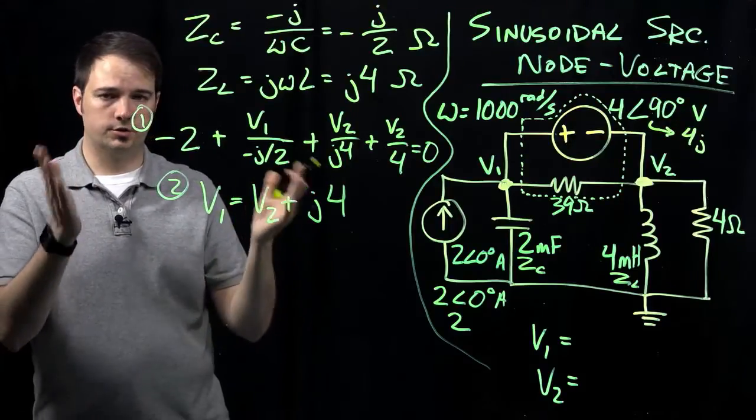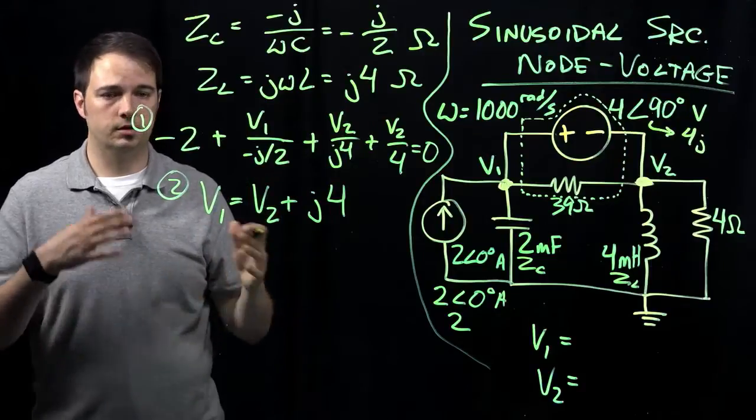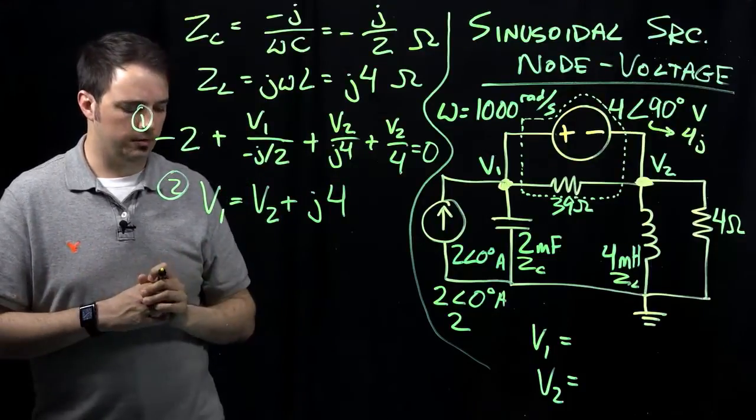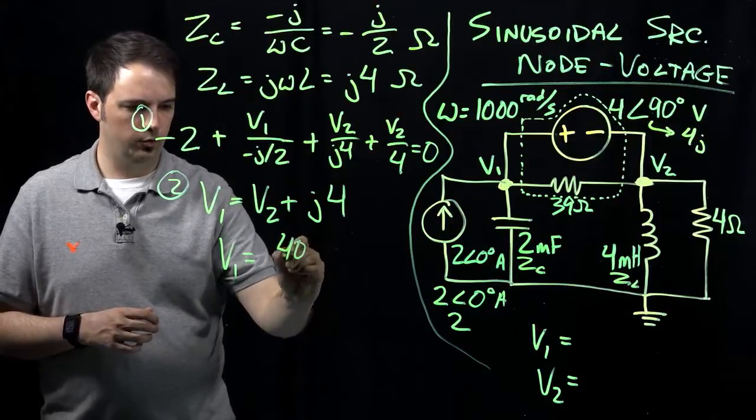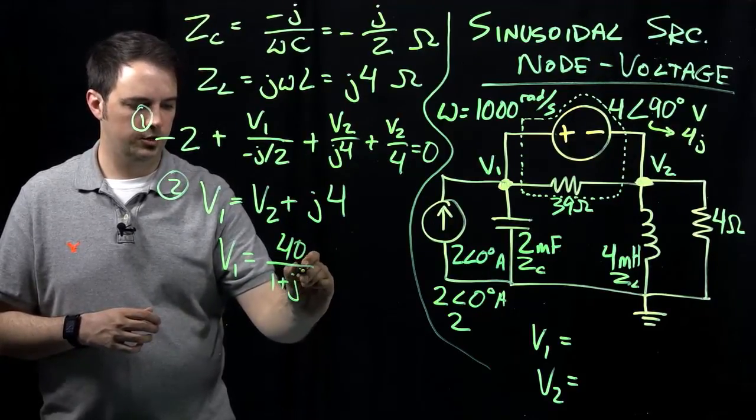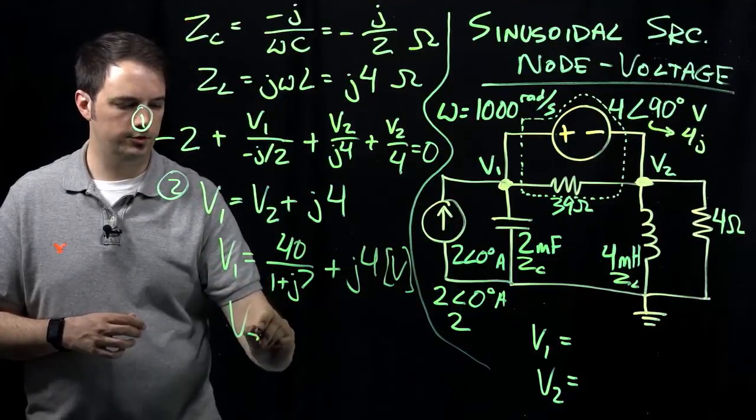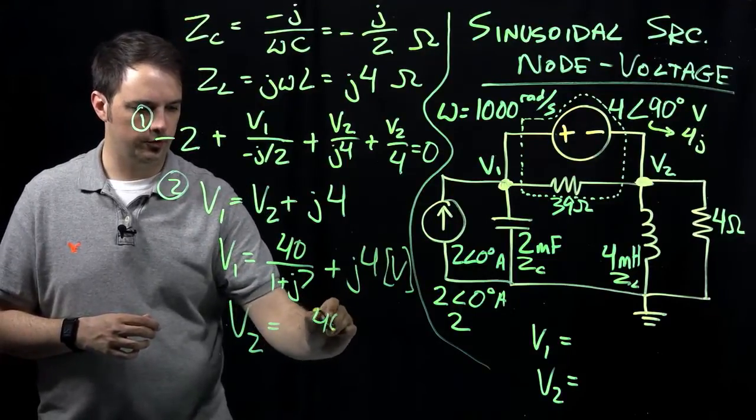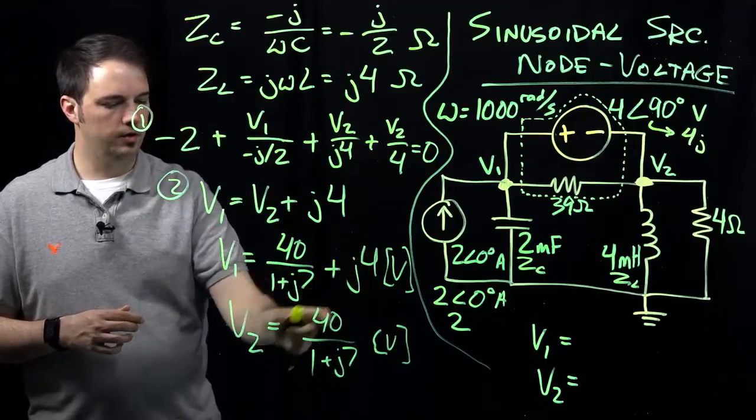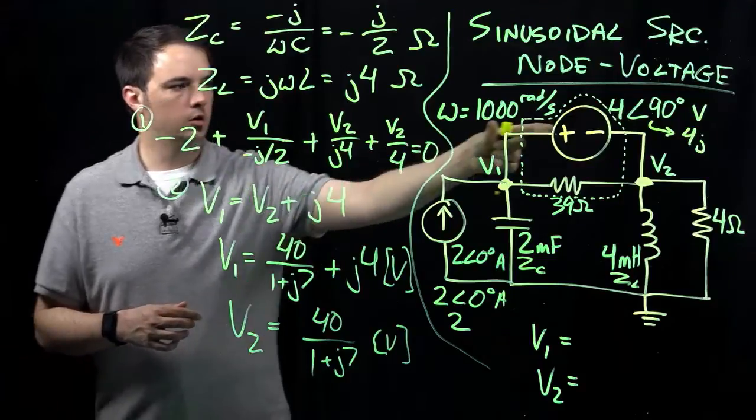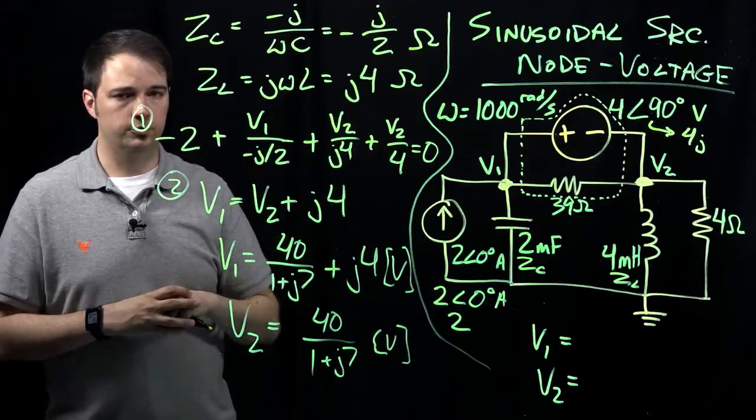That's really all we need to do to set up the problem. As far as doing the evaluations, you might need to brush up on your skills of how we evaluate the imaginary numbers in numerators and denominators, but what you should end up evaluating to is v1 equal to 40 over 1 plus j7 plus j4 volts, and v2 just evaluates to 40 over 1 plus j7 also volts. You can clearly see how v2 relates to v1 through just this quantity j4 which was the voltage source in the circuit.